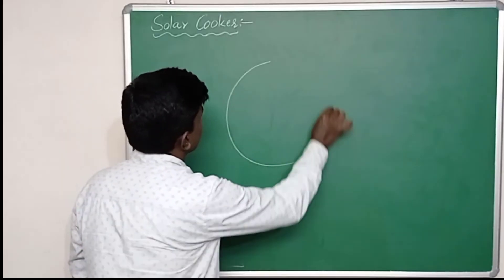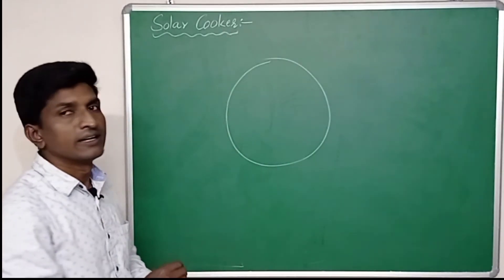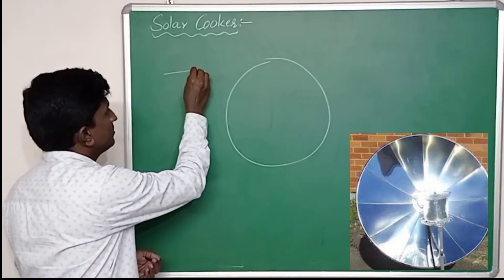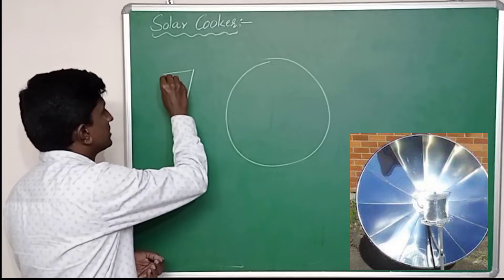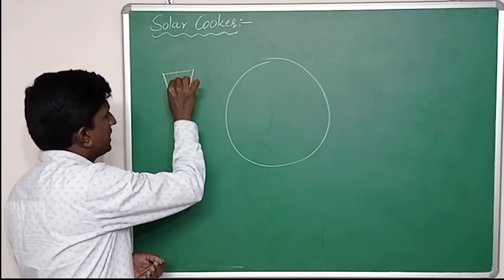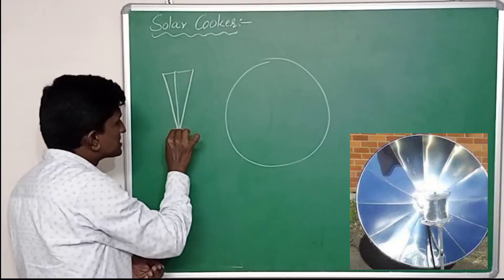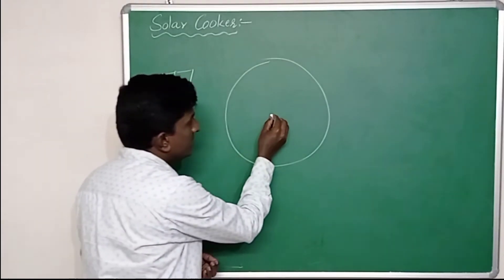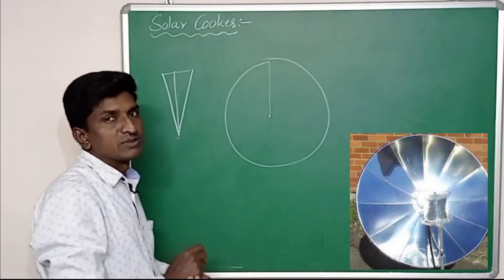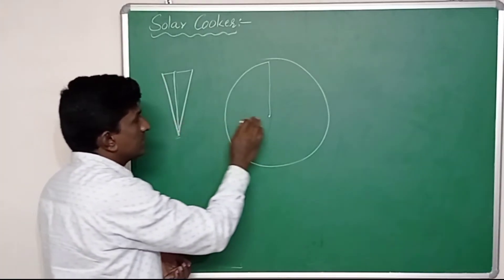For example, here I am taking a concave surface. Now I am taking acrylic sheet, then cutting into eight isosceles triangles. So this height of the triangle should be equal to the radius of this concave surface.